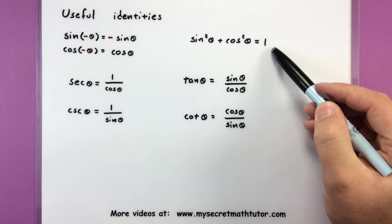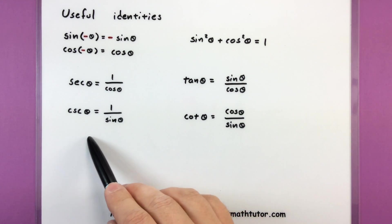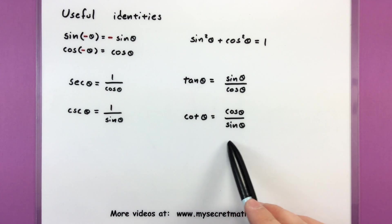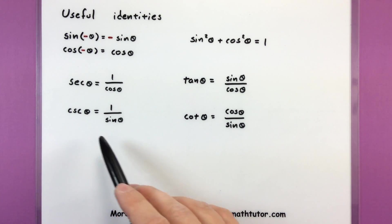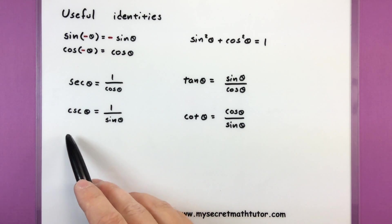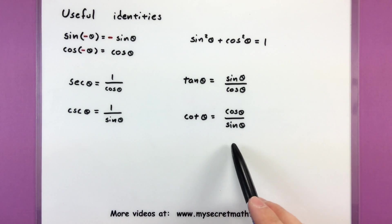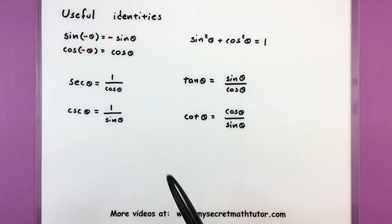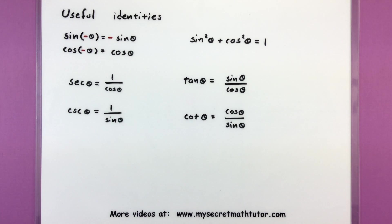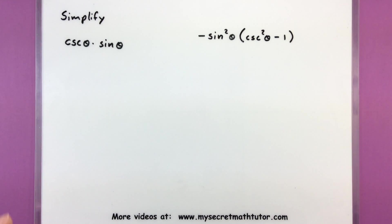Here I have a Pythagorean identity with only sine and cosine. I have my reciprocal identities and my quotient identities, and I'm only going to use these ones so that I can change secant, cosecant, tangent, and cotangent into sine and cosine. That's essentially why I have all these — so that I can change things to involve sine and cosine, and if I do have sine and cosine, maybe there are some ways I can combine them. Let's jump into those examples.